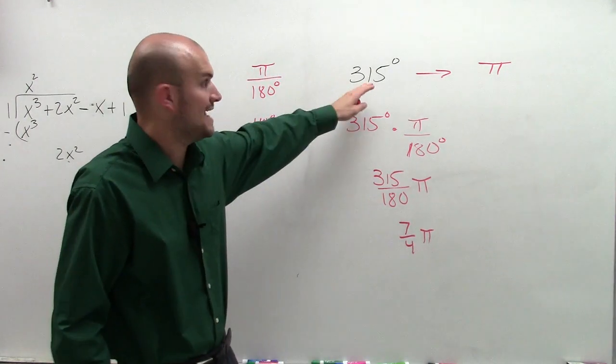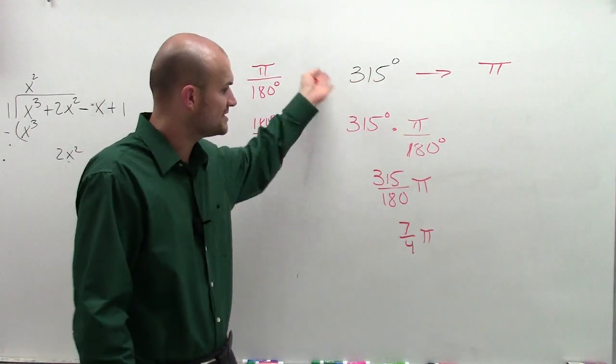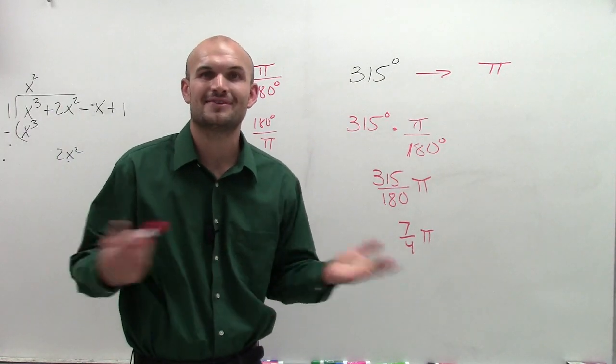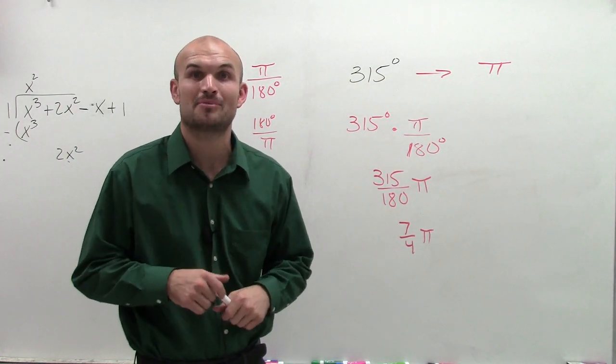So what that means is the angle in degrees of 315 degrees is equivalent to 7 fourths pi. So there you go, hope you understand. If you have any questions, please make sure you comment and subscribe below. Thanks.